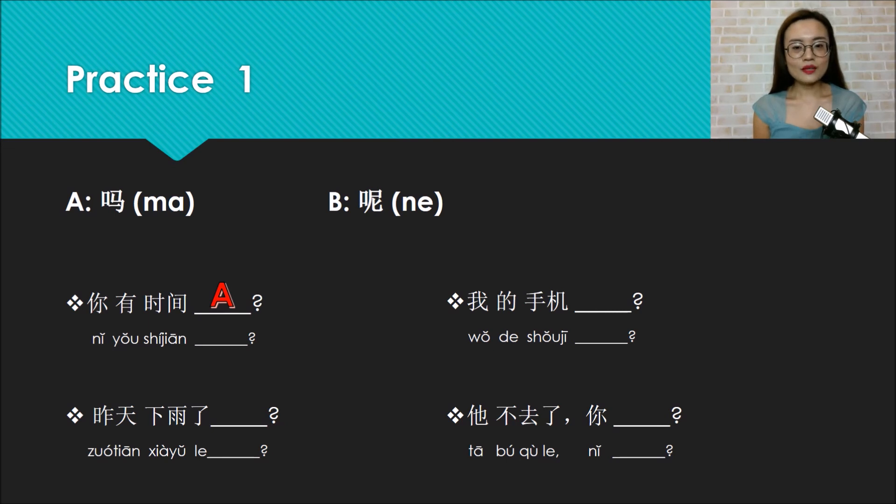Second one: Wo de shouji? My phone. It's only a noun phrase, right? So we just put ne here. And there is no previous description, so this question is only asking location. So it means where is my phone?